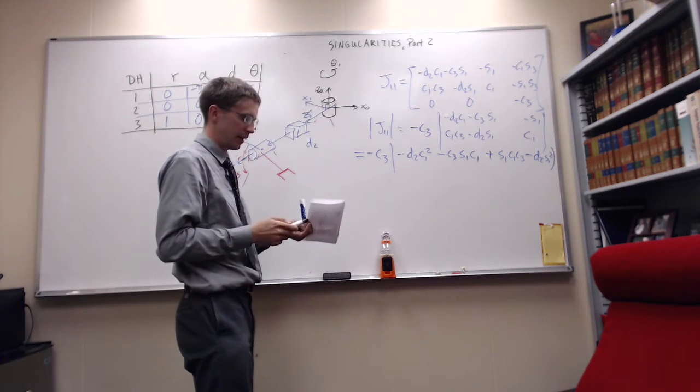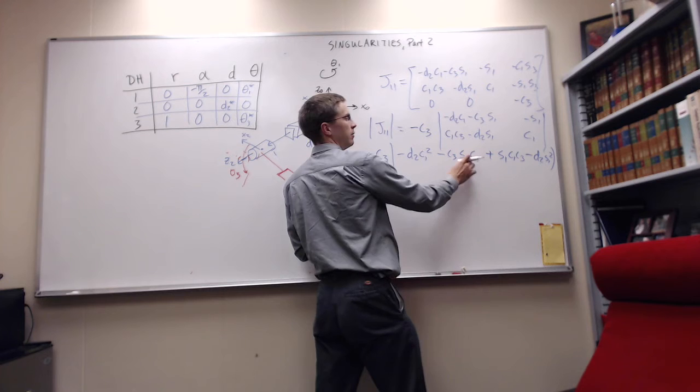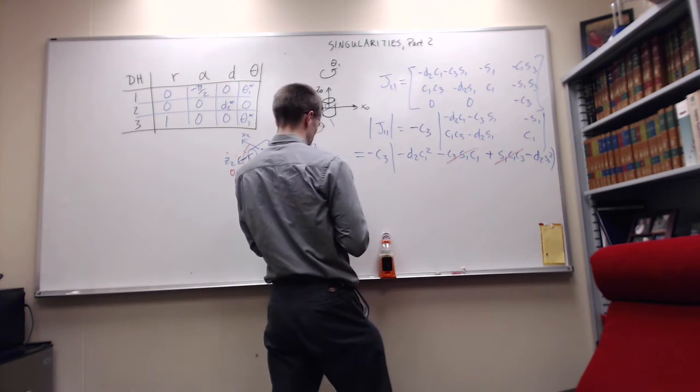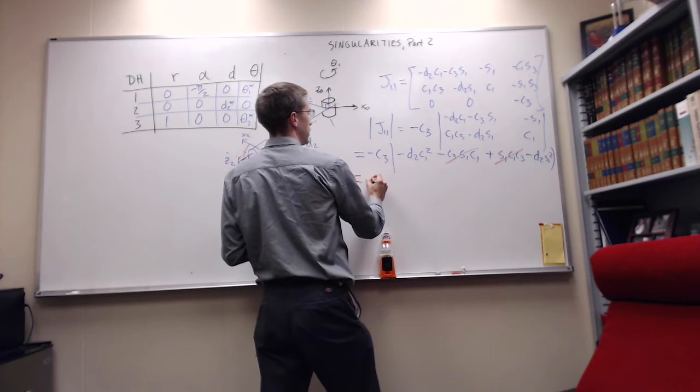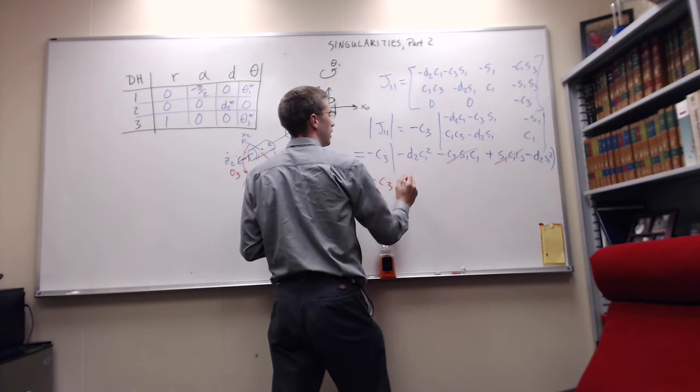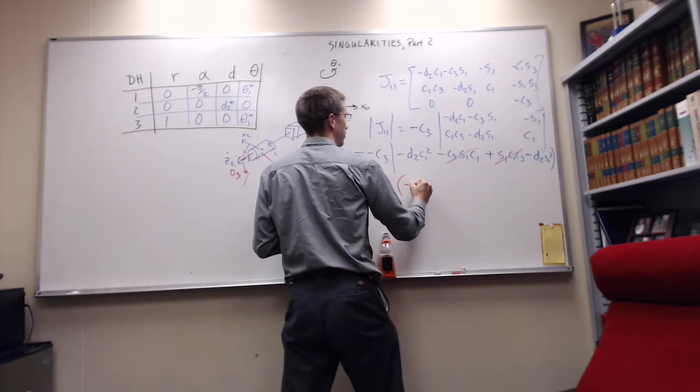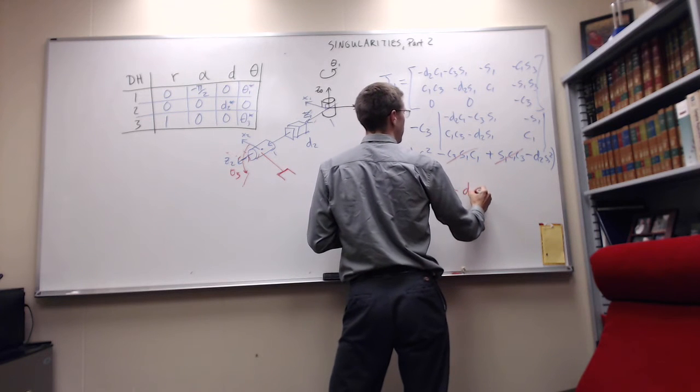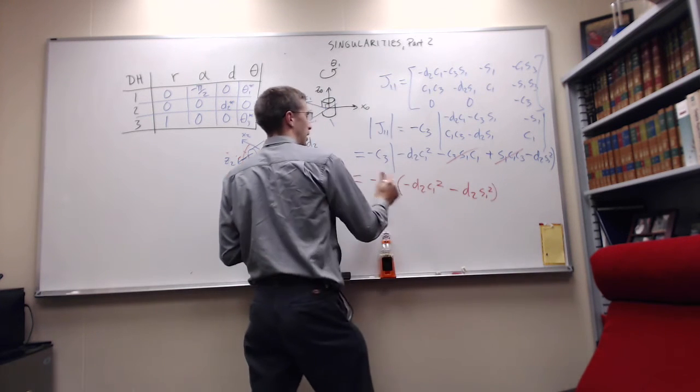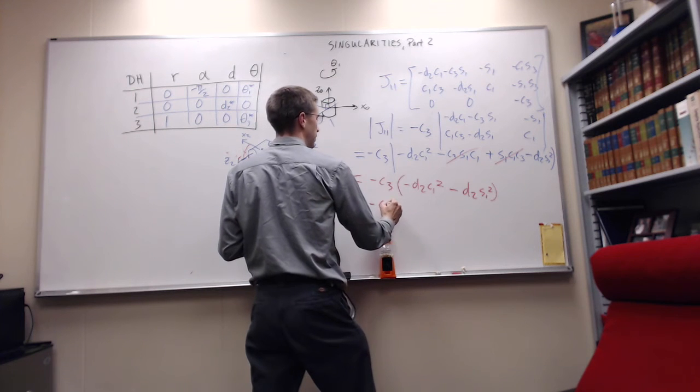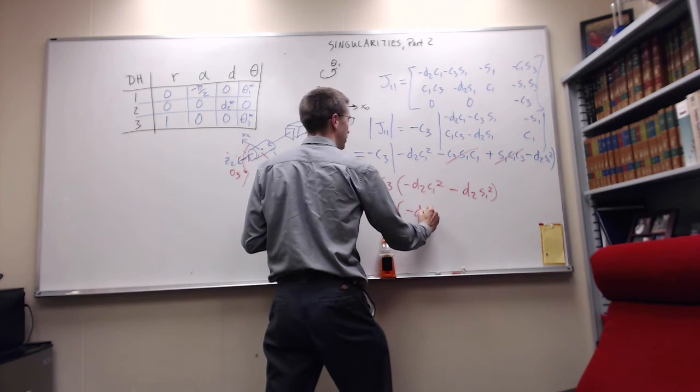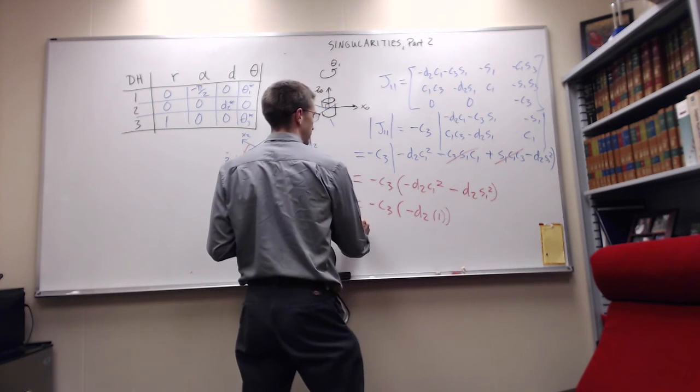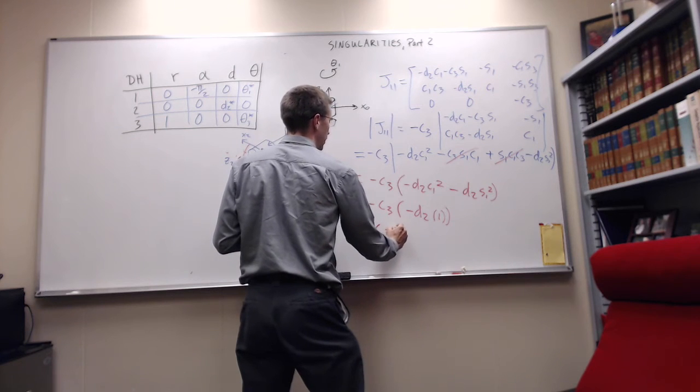Then minus a negative is plus S one C one C three minus D two S one squared. There are a couple of terms that cancel nicely. This S one C one C three and S one C three cancel. So I get negative C three times negative D two C one squared minus D two S one squared, which equals negative C three times negative D two times one, equal to C three D two.